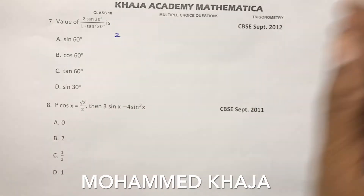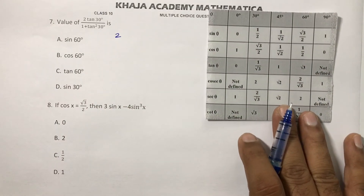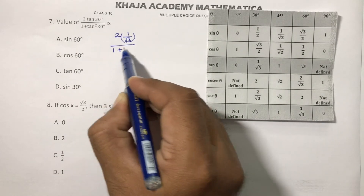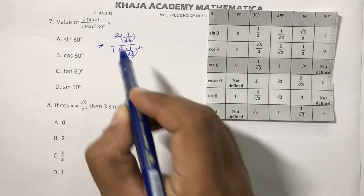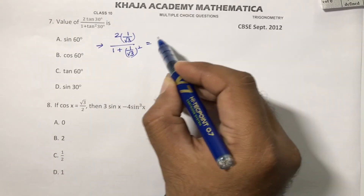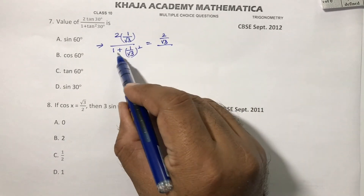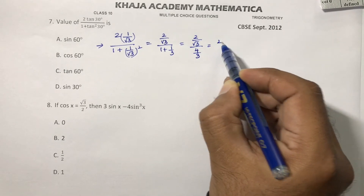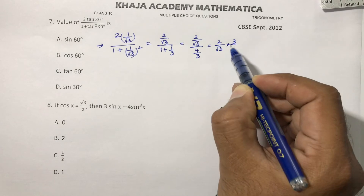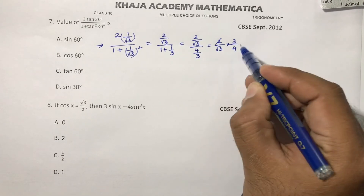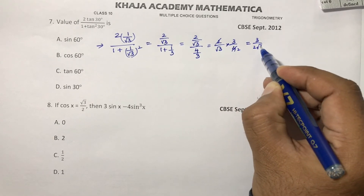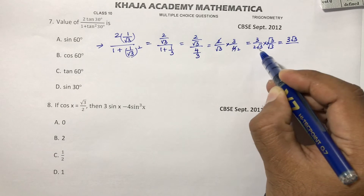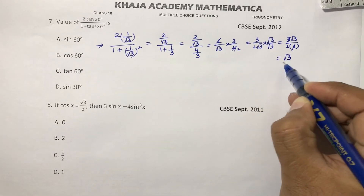Value of 2 tan 30 by 1 plus tan squared 30. Tan 30 is 1 by root 3. So: 2 by root 3 over 1 plus 1 by 3, which equals 2 by root 3 over 4 by 3. Multiply by reciprocal: 2 by root 3 times 3 by 4. Simplify: 3 by 2 root 3. Rationalize by multiplying root 3 by root 3: get 3 root 3 over 6, the 3s cancel, leaving root 3 by 2.